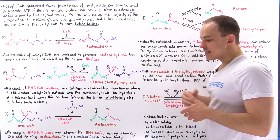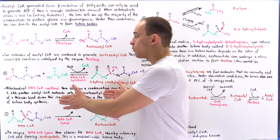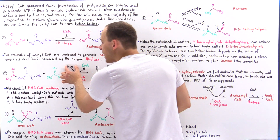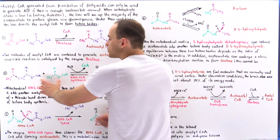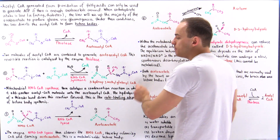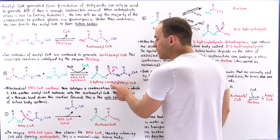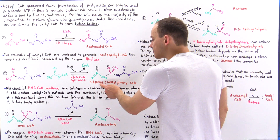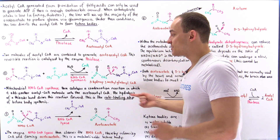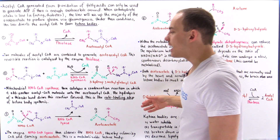In the next step — the rate-determining step — we cleave a high-energy thioester bond via a hydrolysis reaction using a water molecule, and combine another acetyl coenzyme A. We cleave the thioester bond, release the coenzyme A, and form an intermediate known as HMG coenzyme A. HMG stands for hydroxy (H), methyl (M), and glutarol (G), so we form 3-hydroxy-3-methylglutaryl coenzyme A, or simply HMG coenzyme A. The enzyme catalyzing this is HMG coenzyme A synthase, and this is the rate-limiting step.